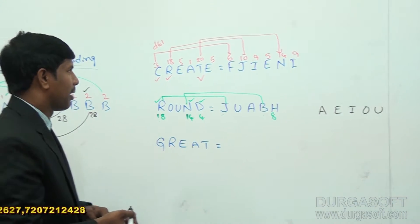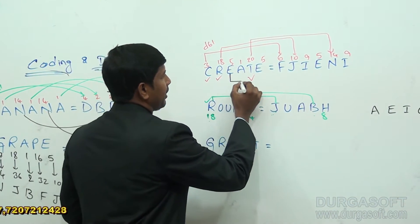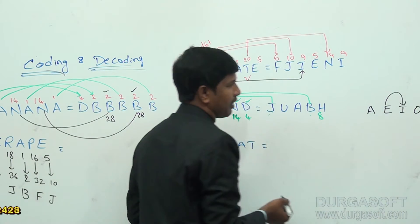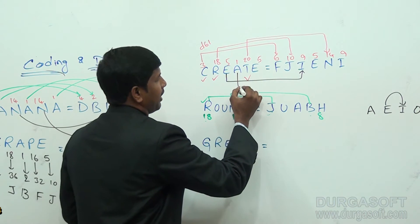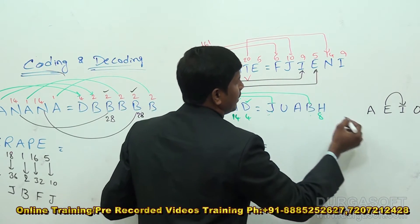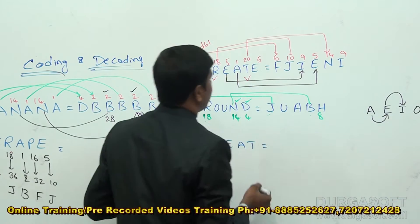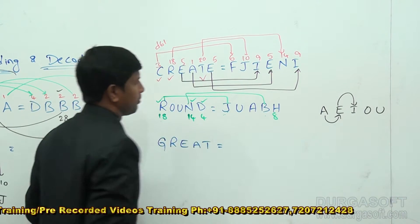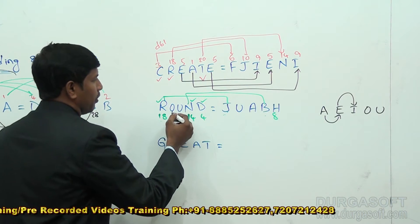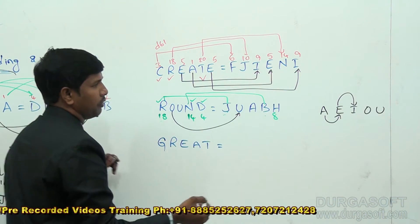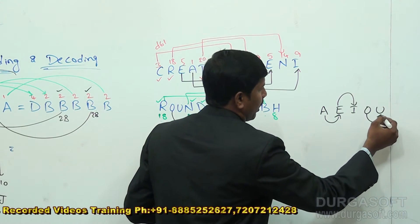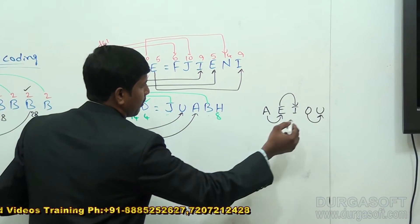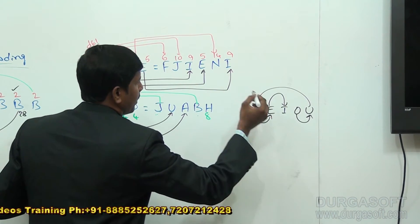Let's see what happened. For E, we are getting I. For A, we are getting E. For E again, I. For O, we are getting U. For U, we are getting A.